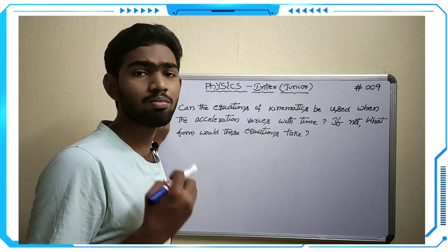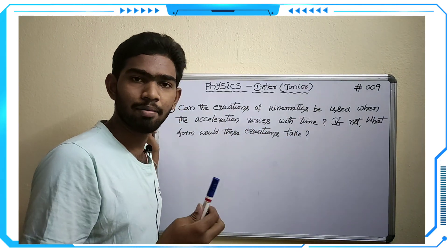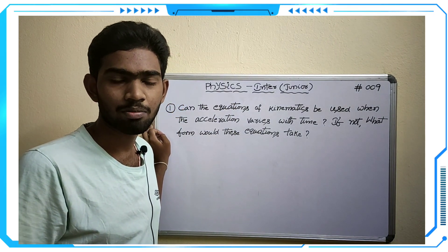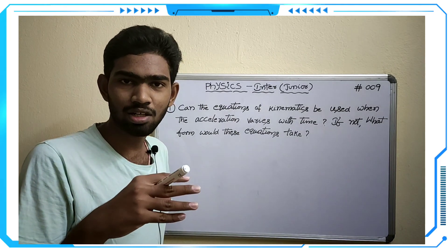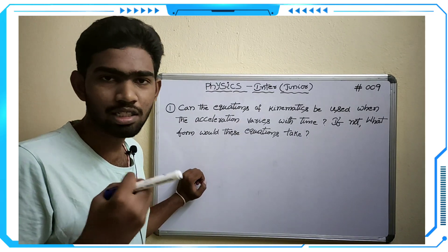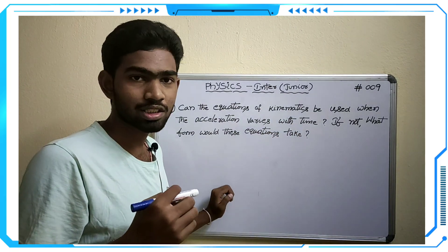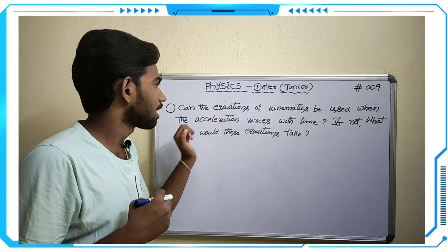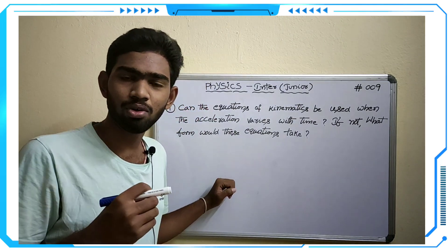The four-mark question in the chapter motion in a straight line is: can the equations of kinematics be used when the acceleration varies with time? We have to remember that in kinematics we cannot deal with force and mass — those quantities are not considered in this chapter. So the answer is blindly no, because in kinematics we cannot see force and mass.